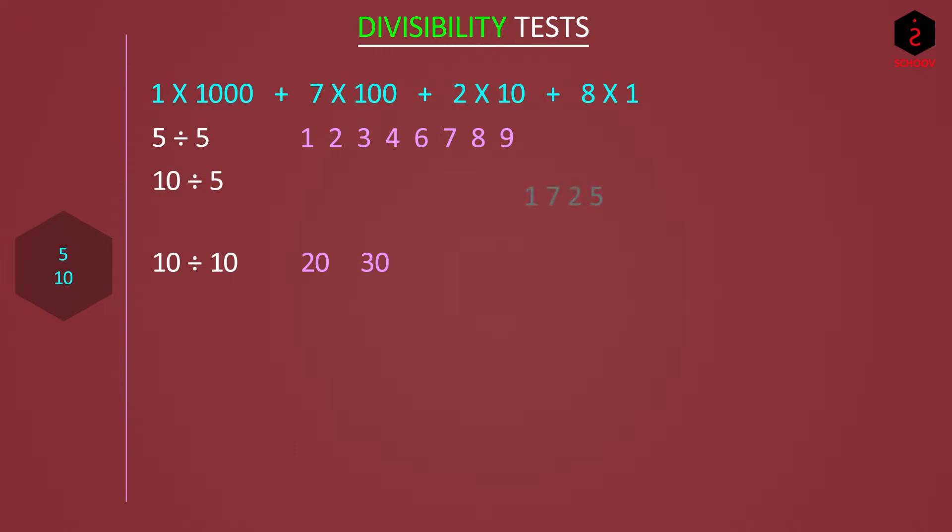However, if we take 1725 for example, it is divisible by 5 but not by 10. 1720 is divisible by both. So for 5 and 10 we check the last digit. For 5, the last digit should be 5 or 0 and for 10 it should be 0. Hope you are getting a hang of how we are finding the divisibility test. It is very important to understand the concept behind it.